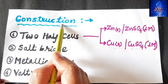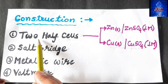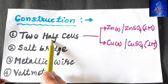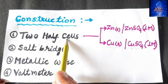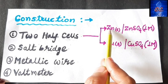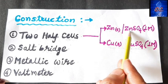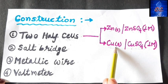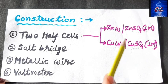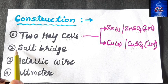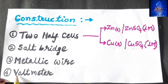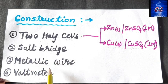Let's talk about the construction of a galvanic cell. Each galvanic cell is made up of two half parts called half cells. One half cell is made up of a zinc rod dipped in zinc sulphate solution, and the other is made up of a copper rod dipped in one molar copper sulphate solution. Additional parts include the salt bridge, metallic wire, and voltmeter.